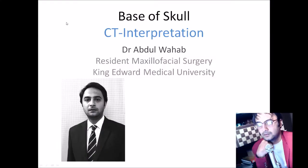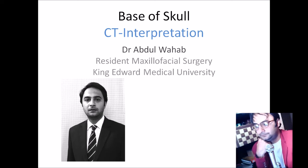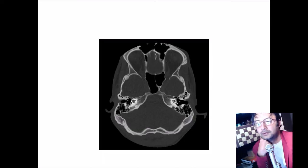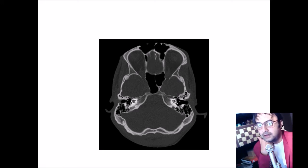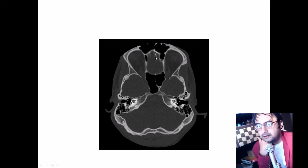Let's start with a quick review of the major landmarks present at the base of the skull. Here is an axial view of the base of skull on HRCT with a bone tissue window. Starting in the midline, in the inner anterior portion you see here is the crista galli, and these are the frontal sinuses.